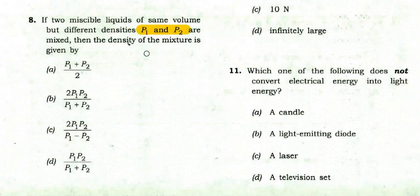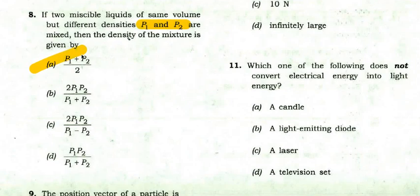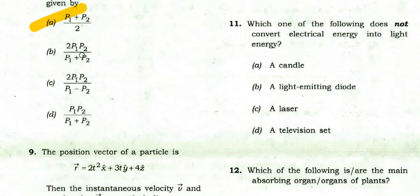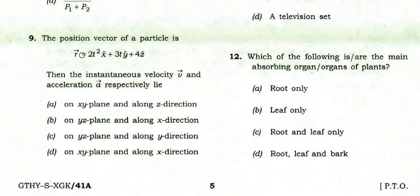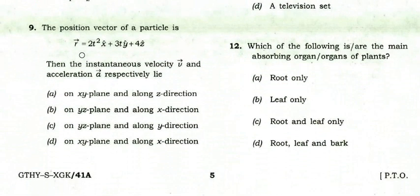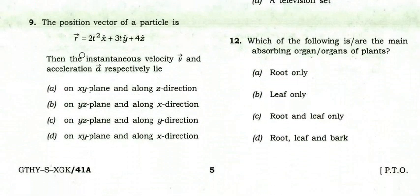If two miscible liquids of the same volume but different densities ρ1 and ρ2 are mixed, the density of the mixture is given by: the right option is (ρ1 + ρ2) / 2, which is the simple average.